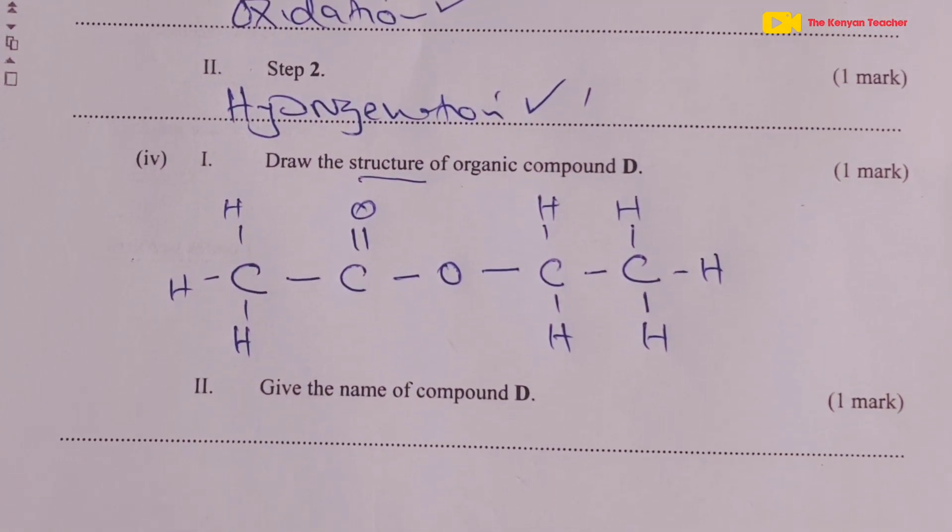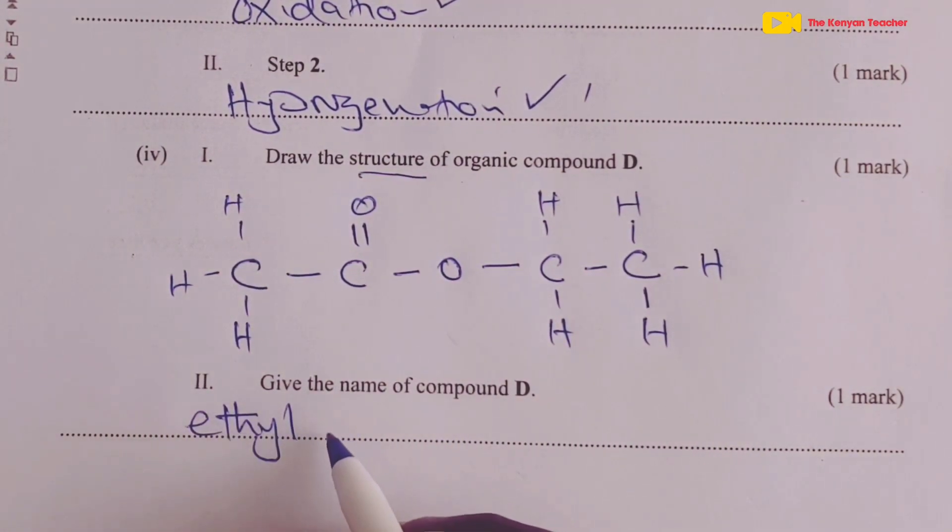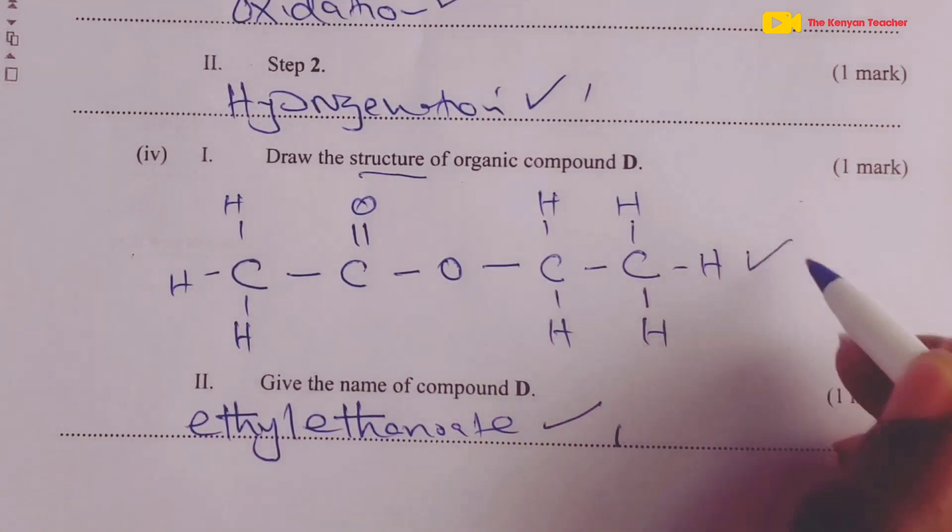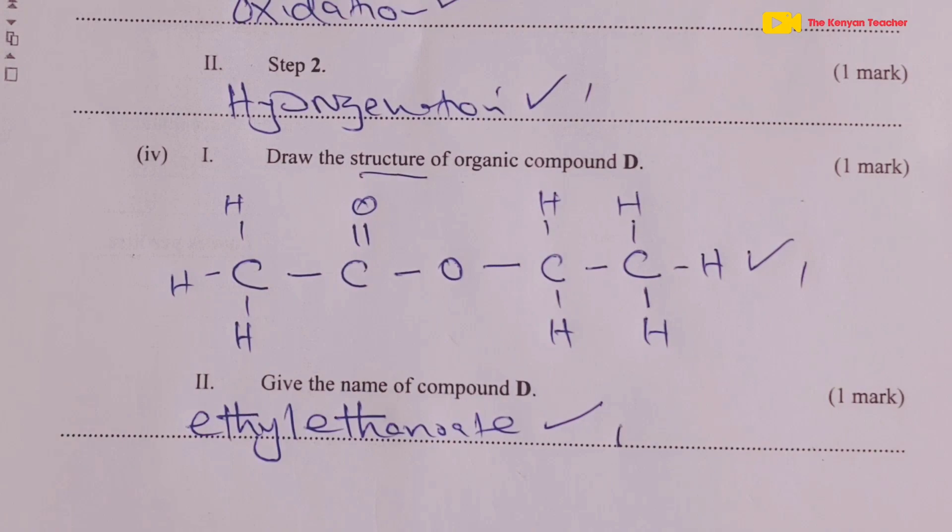Finally, the examiner asked us to name compound D. This is an ester with the name ethyl ethanoate because it is obtained from ethanol and ethanoic acid. One mark for the structure and one mark for the name. That is how organic chemistry was tested in the year 2023 KCSE chemistry part 2. Keep it right here for more of such reviews.